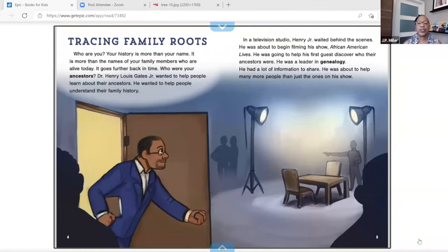In a television studio, Henry, Jr. waited behind the scenes. He was about to begin filming his show, African American Lives. He was going to help his guests discover who their ancestors were. He was a leader in genealogy. He had a lot of information to share. He was about to help many more people than just the ones on his show.